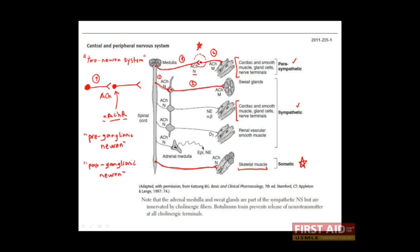In the parasympathetic nervous system, the first or preganglionic neuron is long. The ganglion itself is very close to the target tissue. Whereas in the sympathetic division, the first neuron is relatively short, because the ganglion — found in a series of ganglia known as the sympathetic trunk — is relatively close to the spinal cord. To remember this, you can use the mnemonic 'paralongepre' — that is, the preganglionic neuron of the parasympathetic division is long.